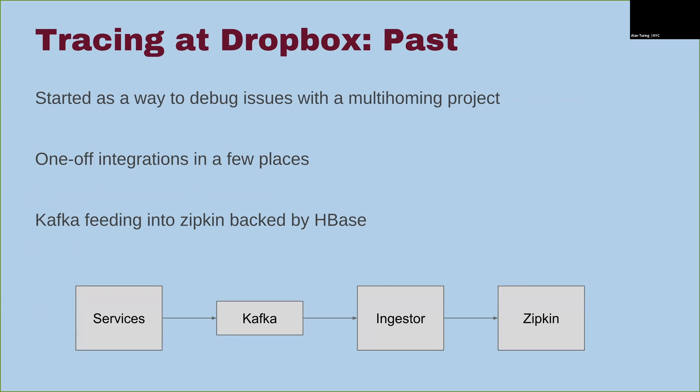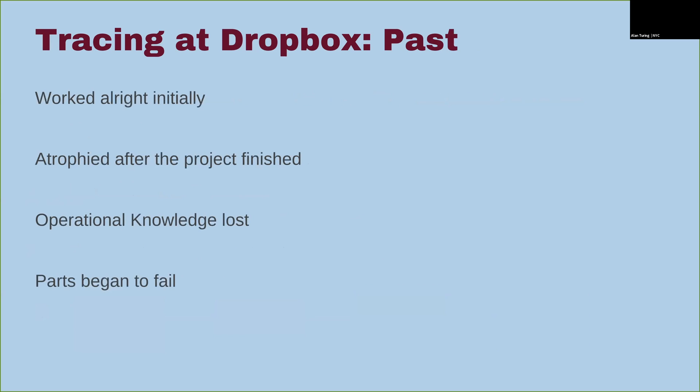To give you a look at the evolution of tracing: the original tracing system started out as a way to debug a multi-homing project a couple of years ago. It was ad hoc, with one-off integrations in a few of our legacy systems, based on Kafka feeding into Zipkin backed by HBase. This worked okay for that point in time and solved the problem, but once the multi-homing project concluded, people moved on, no one knew how to use it, and eventually it just sort of fell apart.